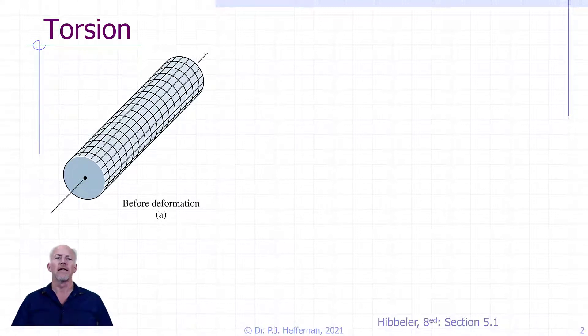That way we'll be able to visibly see what's going on with the shaft as it twists. We'll draw a series of longitudinal straight lines on the rod, as well as circumferential lines to see what happens after the torque is applied.